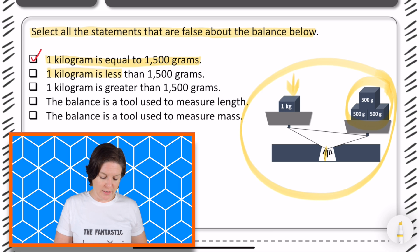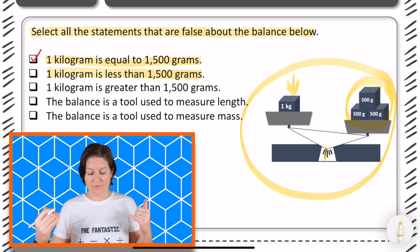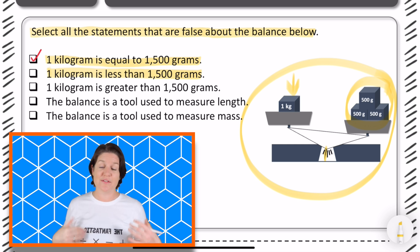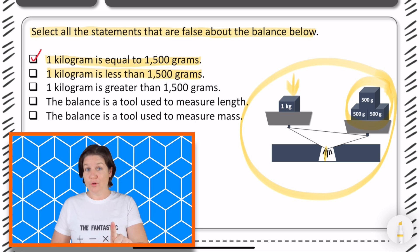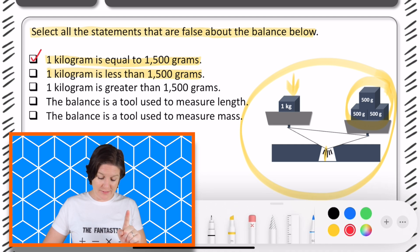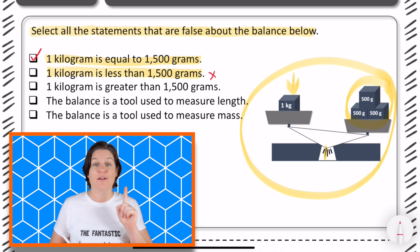Next up, we have that one kilogram is less than 1,500 grams. Well, that is true, right? It is less because we can see that the three 500 grams or 1,500 grams contains more mass. It's heavier on that side. So, this one is true, but careful. We don't want to pick it because it is true. We're looking for the ones that are false.